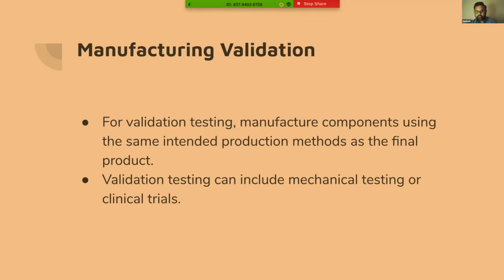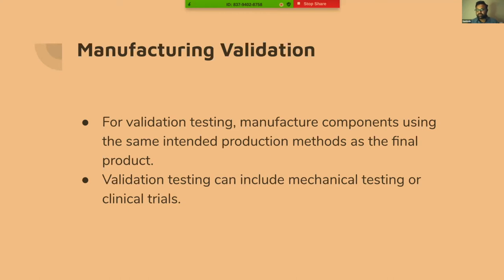The kind of validation and verification testing you do is dependent on the risk. For a class one device with a lot of history, you could get away with laboratory testing — as simple as tensile testing, or calling three end users with different skill sets to see if they could use it. But for class two or class three, it becomes more and more rigorous. If you can't produce what you envision as a design, the final user won't be able to use it. So it's important to design products which can be manufactured and which can also be tested.